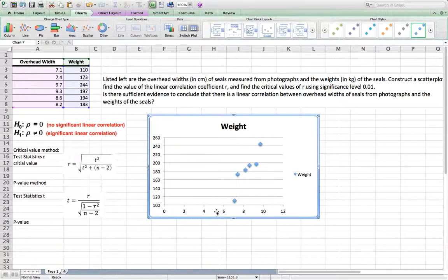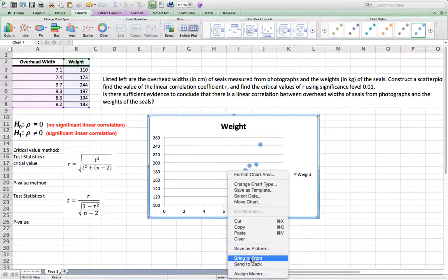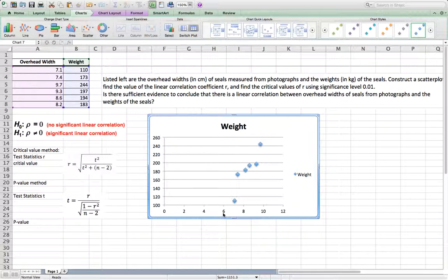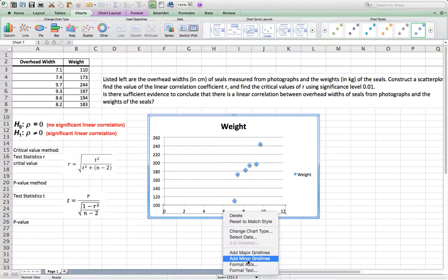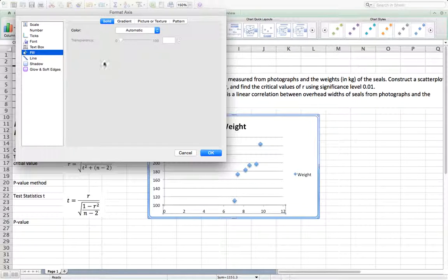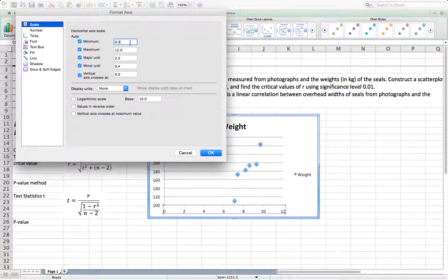Then I click on this horizontal axis, I right-click it. Oh, it disappeared. Wait a moment. Cancel it. I click on here, then I right-click it, you click on format axis, then format axis scale, I want to start from 7, okay?